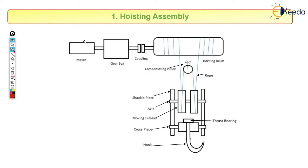The main component through which we are going to get the power is the motor. This is the motor part through which we are going to get the revolutions. After that, the motor is connected to a gearbox, and this gearbox is connected to coupling, and this coupling is connected to hoisting drum.